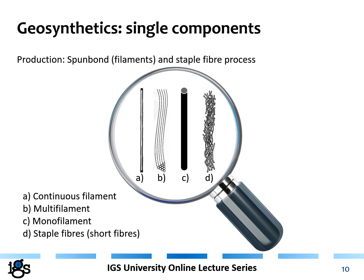Before discussing production methods, here are some key definitions. A continuous filament is an endless, thin filament, similar to what a spider produces. A multifilament is a combination of two or more filaments either laid next to each other or twisted together. A monofilament is thicker than a continuous filament. And staple fibers are cut short fibers put together either as a yarn or used as single fibers.